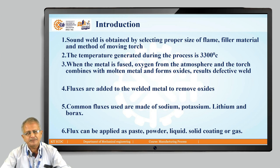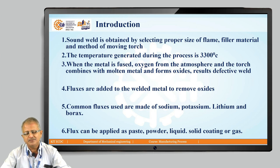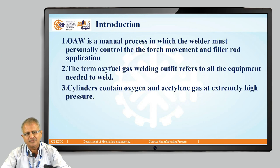When oxygen and acetylene are combined in the torch in definite proportion, that gives an intense flame which we can use for joining the metal. After that, fluxes are added — of sodium, potassium, lithium, or borax — as per the requirement. Flux can be used in the form of paste, powder, liquid, solid, or in a coating form.